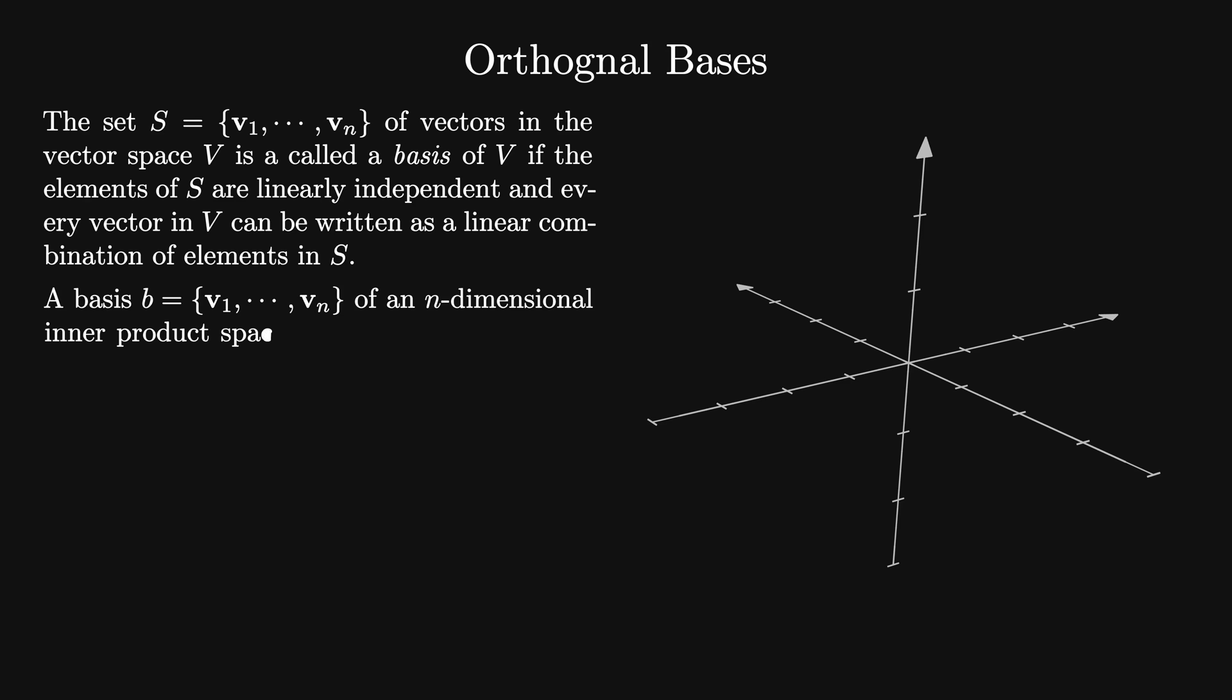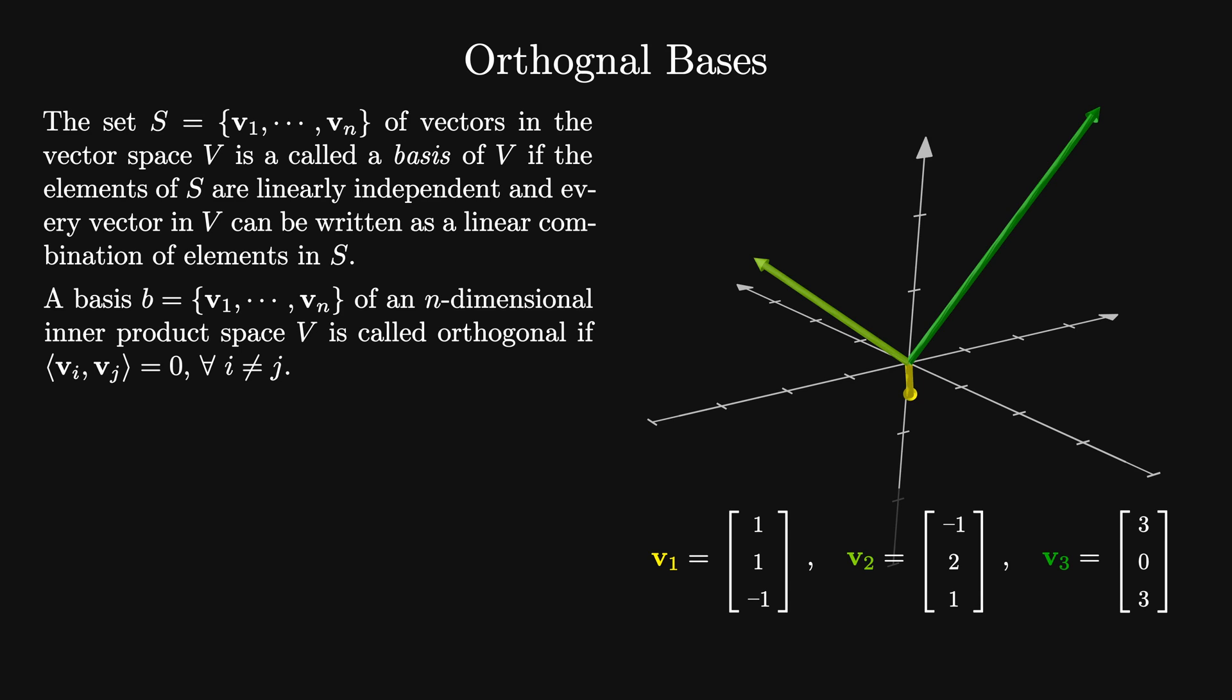a basis B of an N-dimensional inner product space V is called orthogonal if the inner product of any pair of vectors in B is equal to zero. Let's look at this example of an orthogonal basis for R3. V1 is equal to 1 1 minus 1, V2 is equal to minus 1 2 1, and V3 is equal to 3 0 3. We can easily check that it is an orthogonal basis.